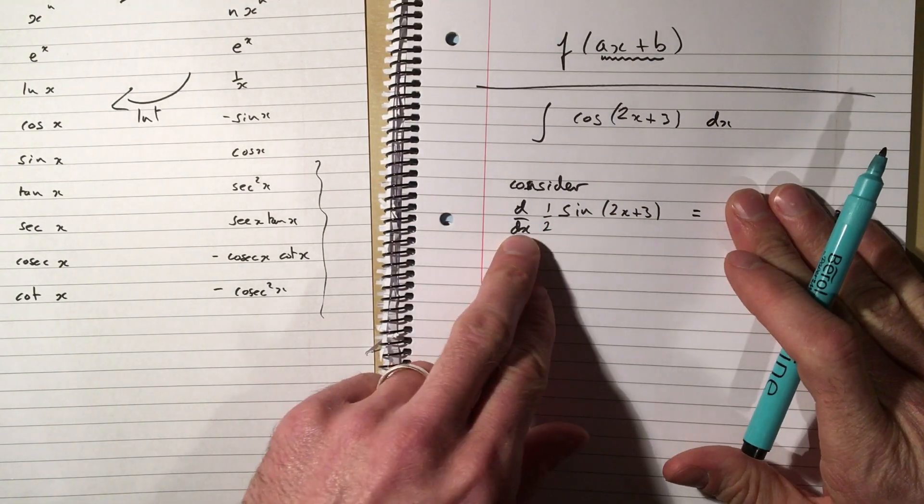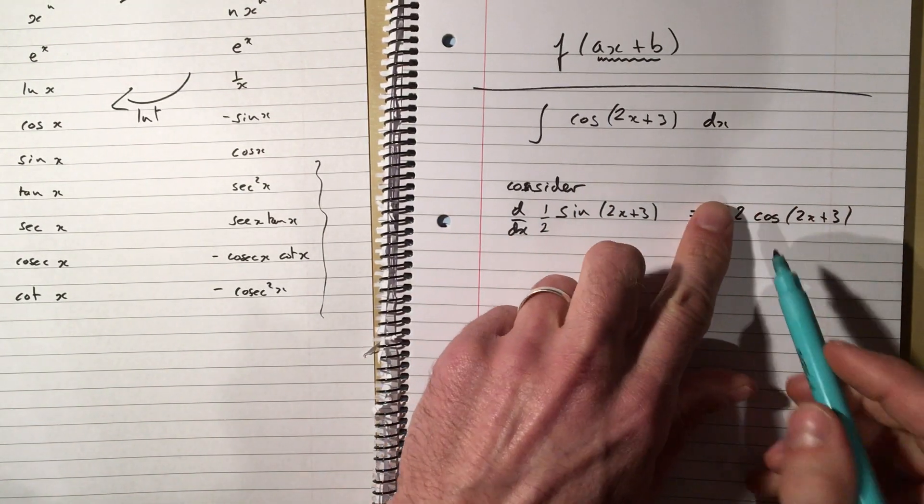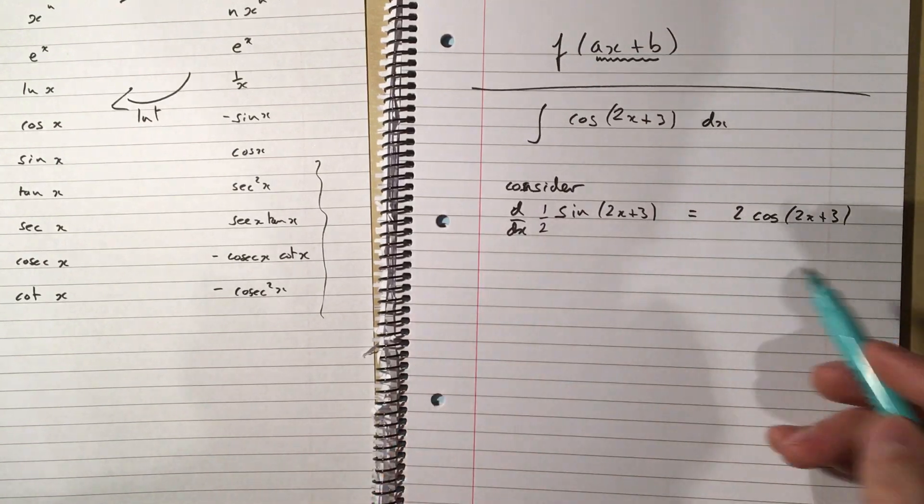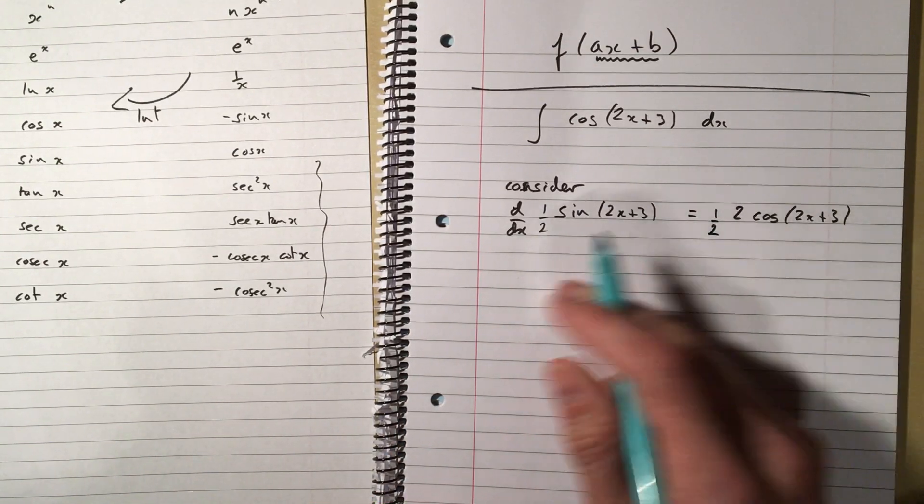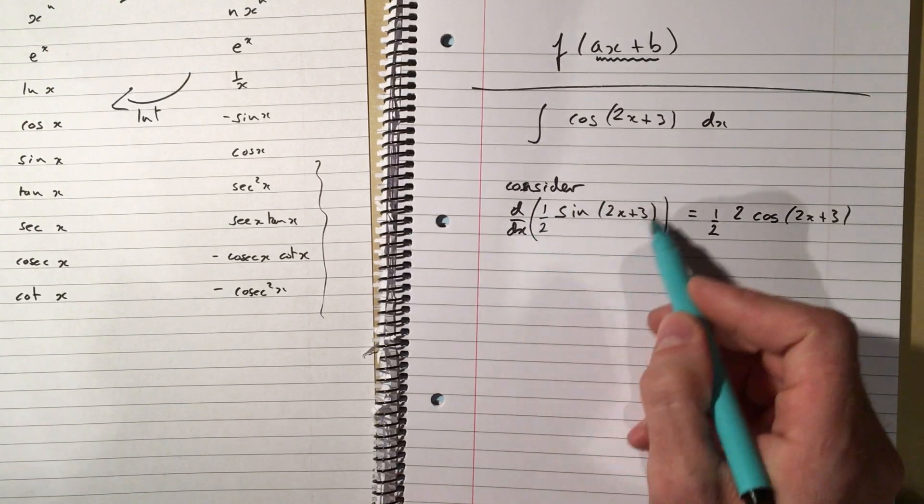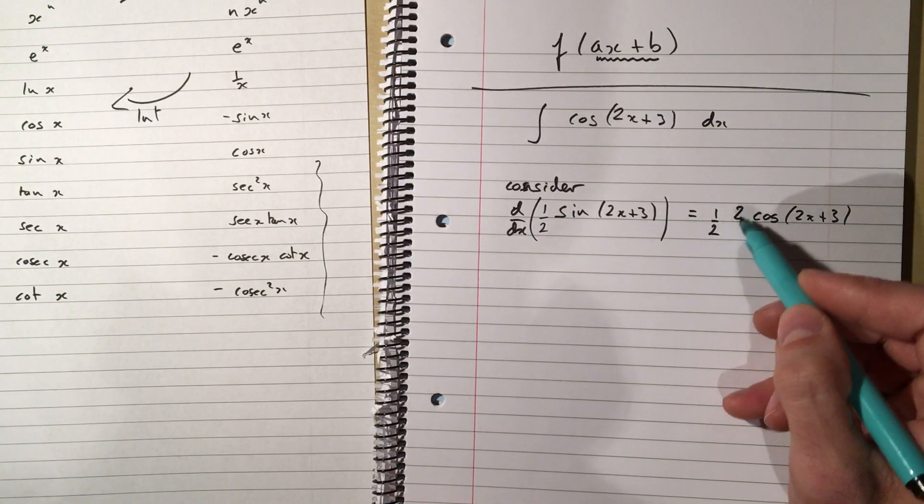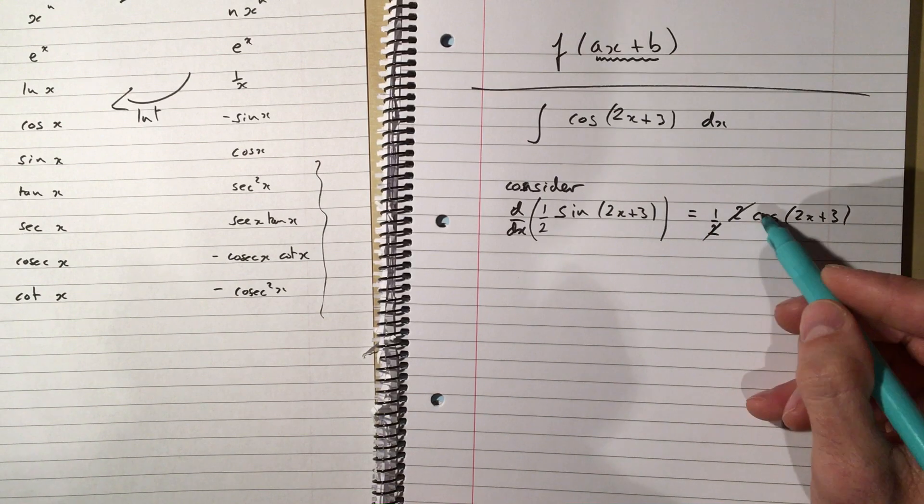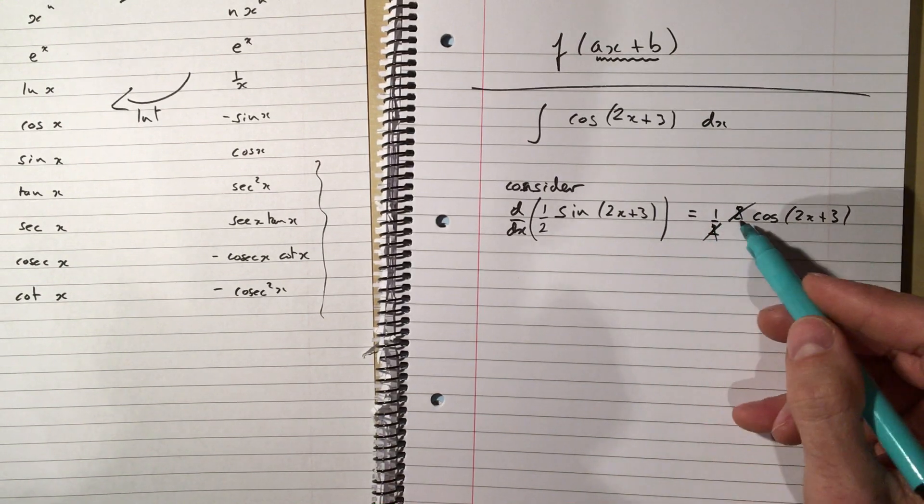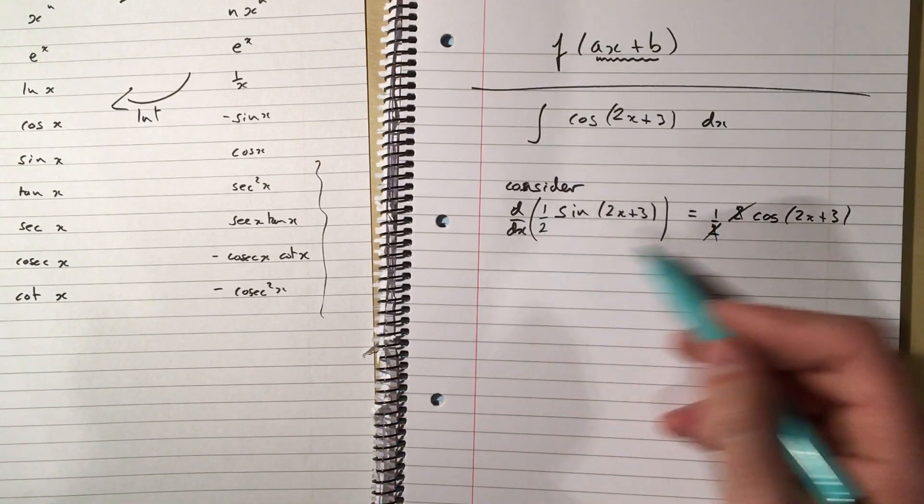So what if I'd differentiated that, I would have got this times by that half, because that's just a constant in front. So the derivative of that is that, and here, look, the 2's cancel out. So that's why I picked a half to go in front.